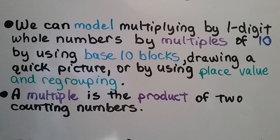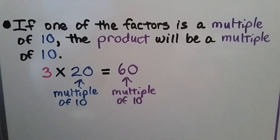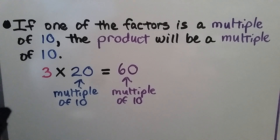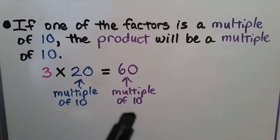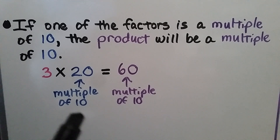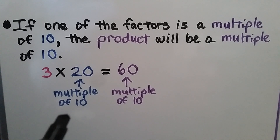Remember, a multiple is the product of two counting numbers. If one of the factors is a multiple of 10, the product will also be a multiple of 10. For example, 3 times 20 is equal to 60. The factor 20 is a multiple of 10 because 10 times 2 equals 20, and 60 is also a multiple of 10 because 6 times 10 equals 60.